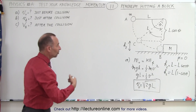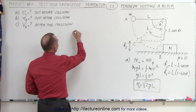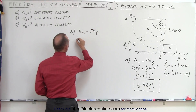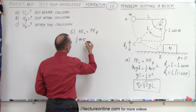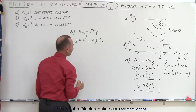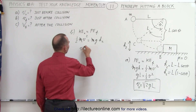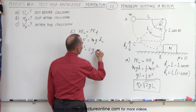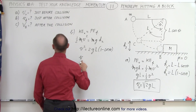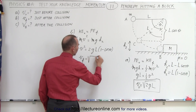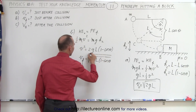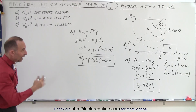We use the same energy concept to find the velocity right after the collision. Kinetic energy initial equals potential energy final: one-half MV squared equals MG times H2. The M's cancel, giving V squared equals 2G times L(1 minus cosθ). Therefore, the velocity right after the collision, V2, equals the square root of 2GL times (1 minus cosine theta). That is the velocity of the pendulum right after it hits the block.